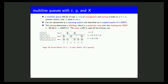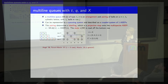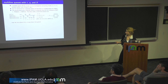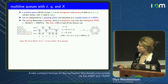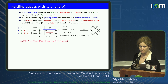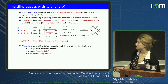A multi-line queue of type lambda with n sites is a configuration of balls on a lattice with n columns and lambda_1 rows, such that we have lambda_j-conjugate balls in row j. This can be represented as a queuing system described as a coupled system of single-species ASEPs. There is a pairing procedure that pairs balls from a row above to balls in the row below, determining a labeling. Balls from row three pair and send label 3 to balls below, and so on. This labeling is called a projection map onto the ASEP, and the projection reads the labels from the bottom row. For example, the labels at the bottom row might be three, one, zero, one, two, three.